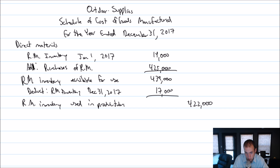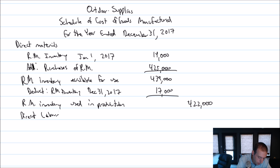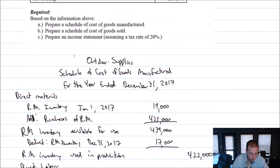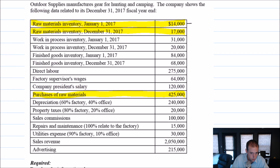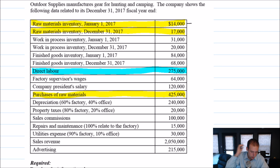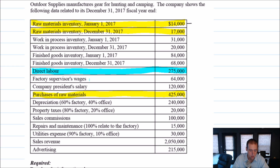$422,000 in raw materials was used. Now let's move on to direct labor. Remember, the cost of any products is the material plus the labor plus the overhead. Direct labor is just a lone line item — $275,000. You might ask about the factory supervisor's wages. Well, if they're in a true supervisory role, they don't have their hands on the products, so they would be indirect labor. So it's just direct labor: $275,000.